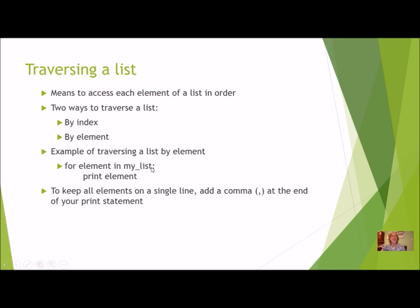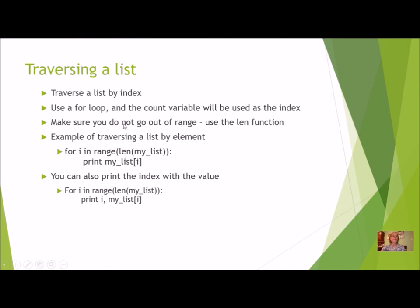Now, this works many times, but sometimes I do need to traverse the list by index because the index could matter. I need to know the position. So to traverse a list by index, I'm still going to use a for loop and the count variable in my for loop. So I do for count or for x equals for i. That count variable is going to be the index. It's the index reference. When you're doing this, make sure that you do not go out of range. And the easiest way to do this is to use the length function len of the index. It's always going to tell me how many elements there are.